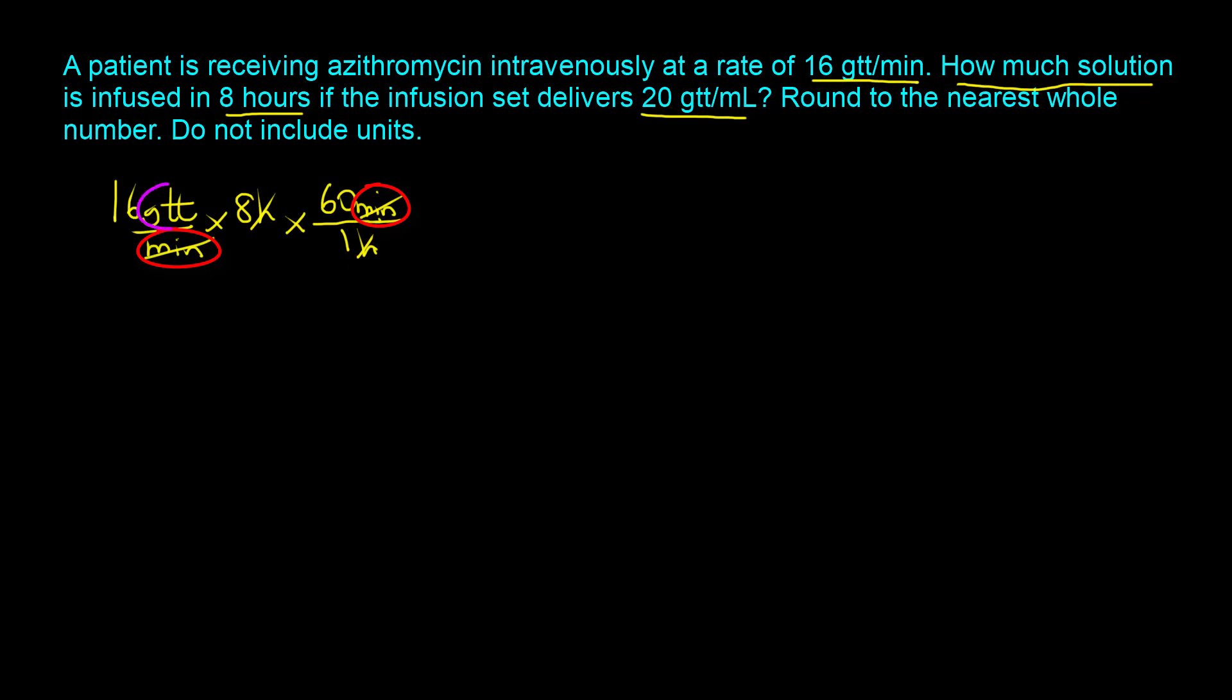What we want to do next is to get rid of the drops from the numerator. We need some quantity with a drop component, and that's where the calibration factor becomes pertinent.